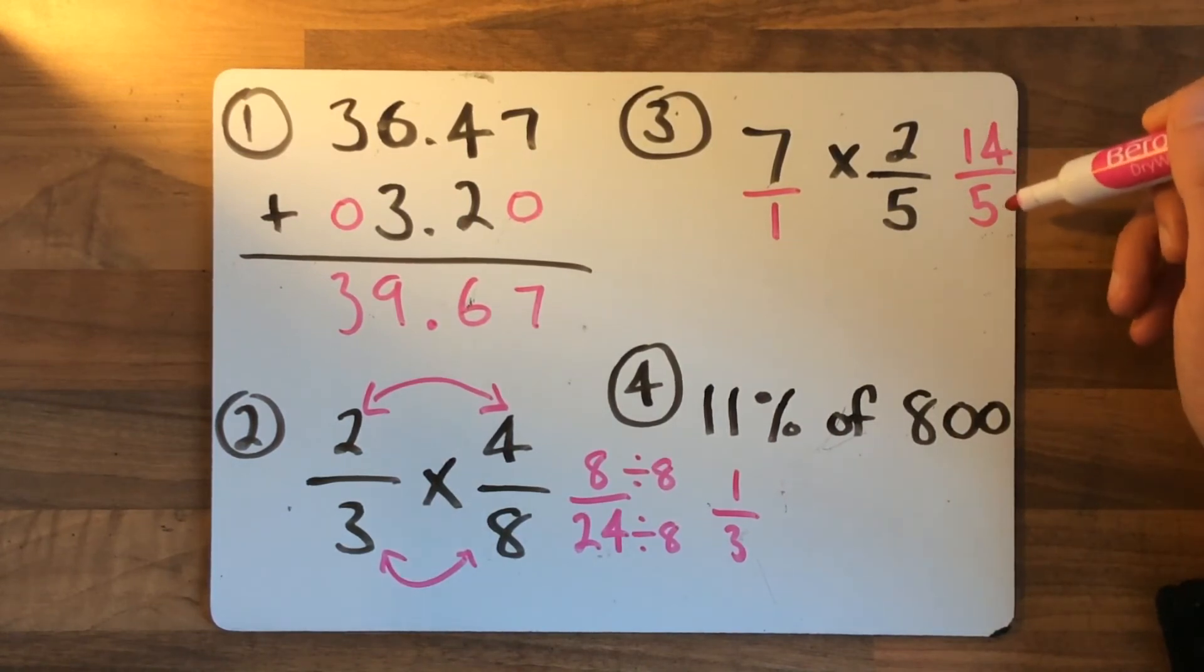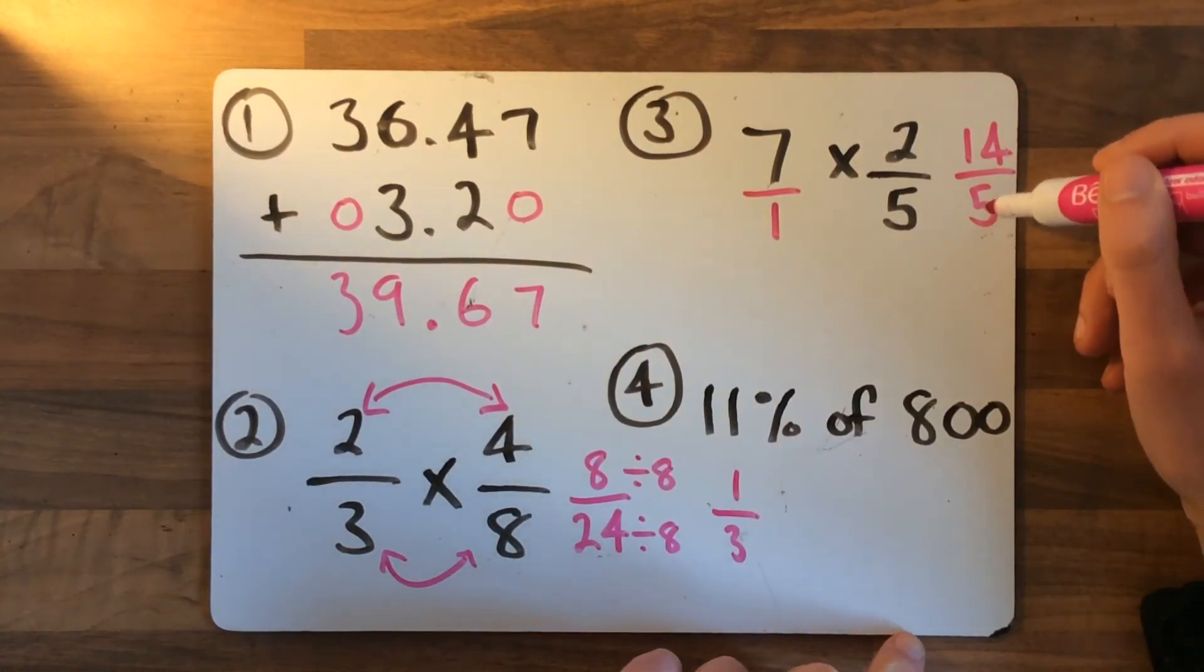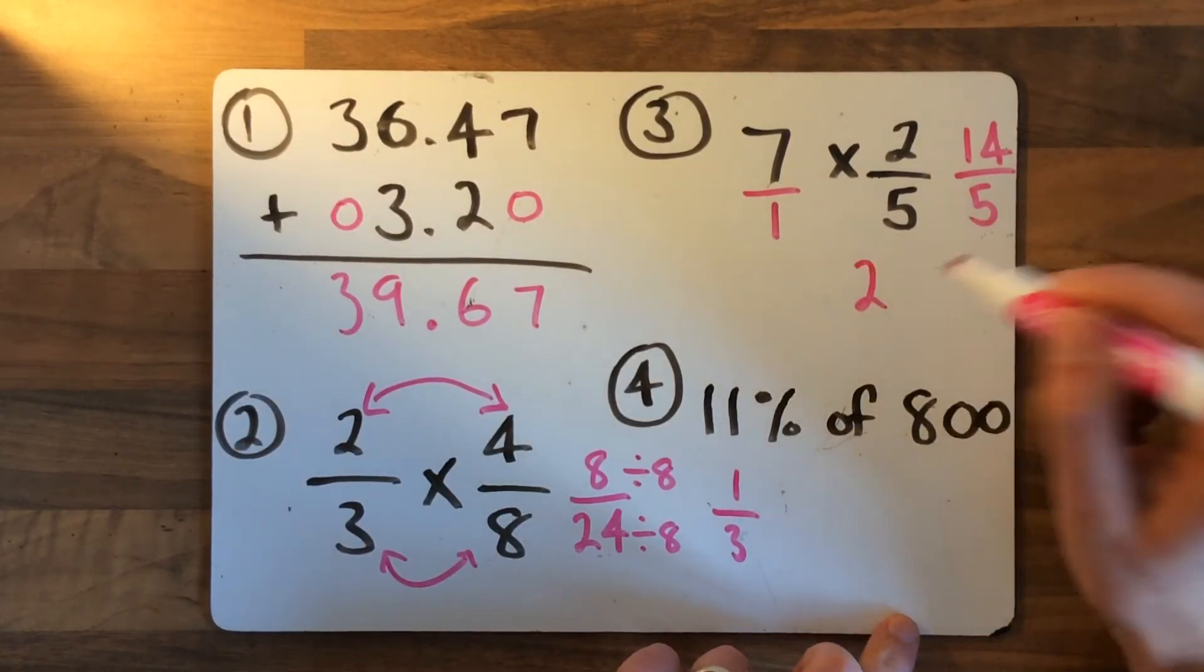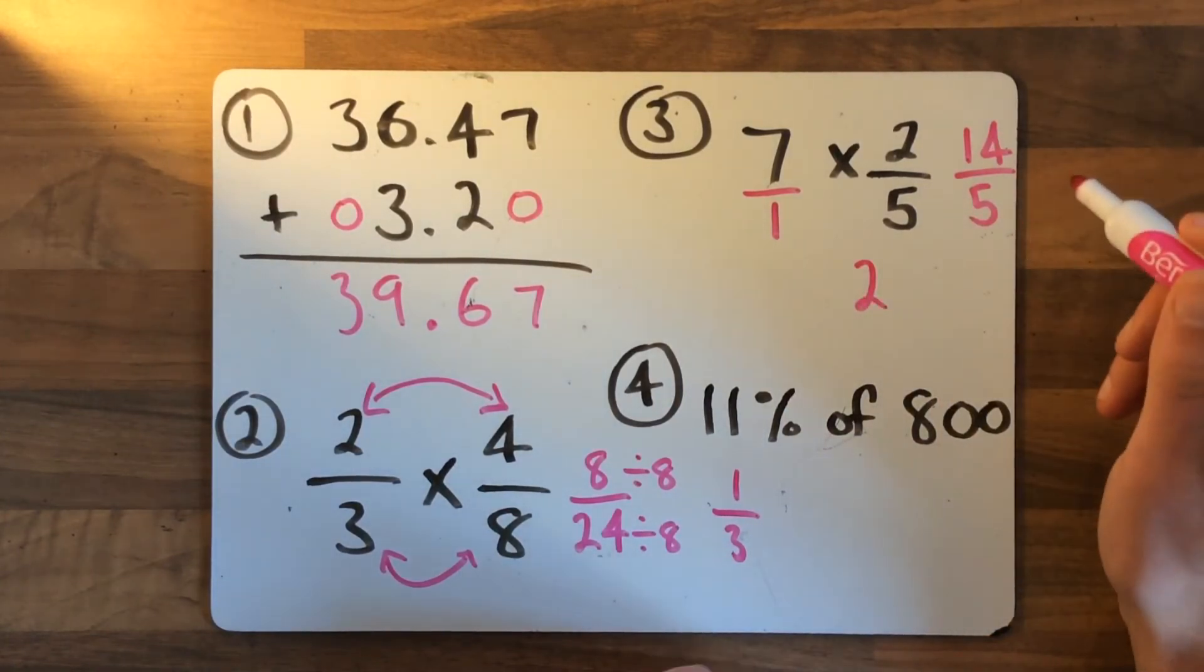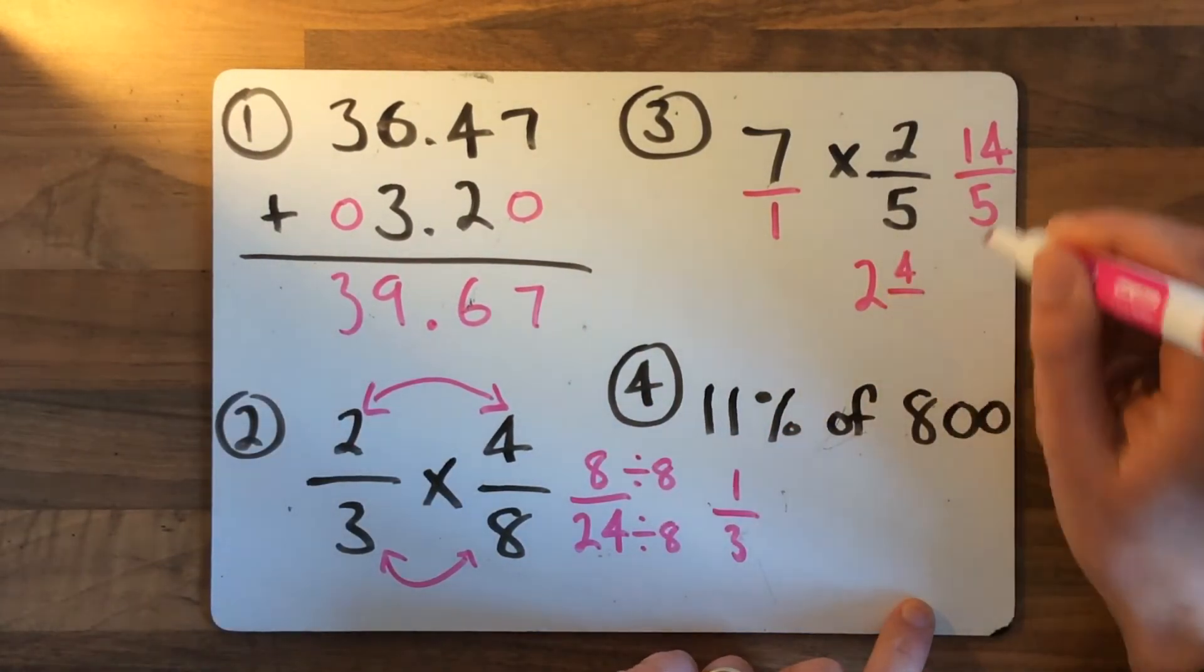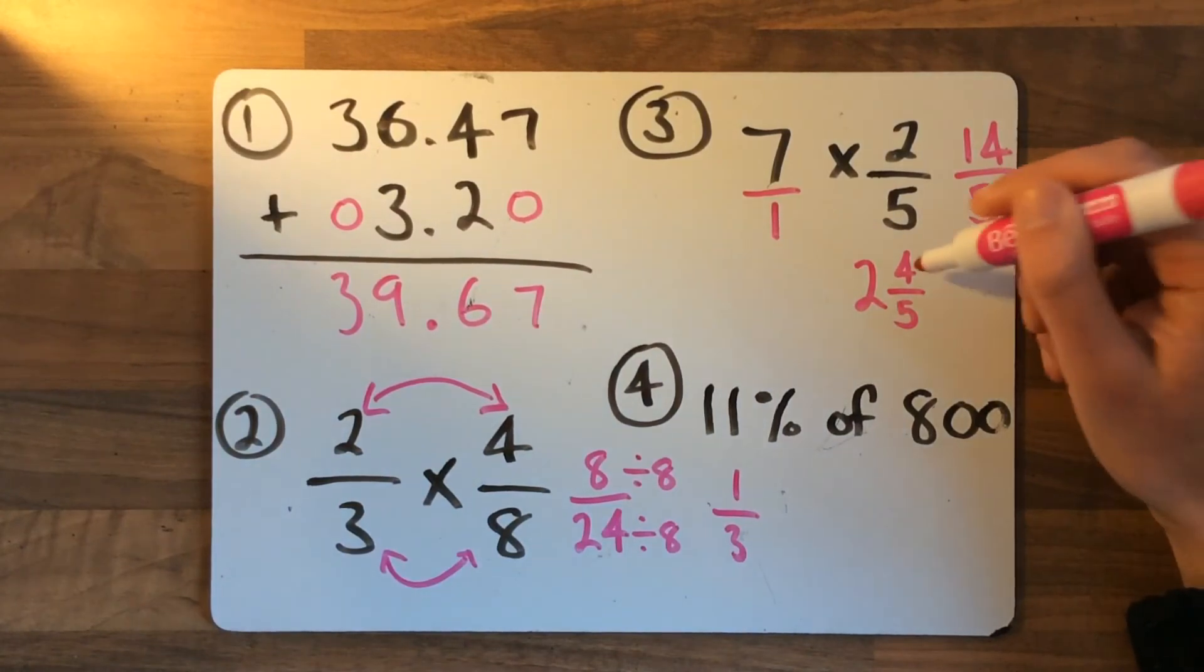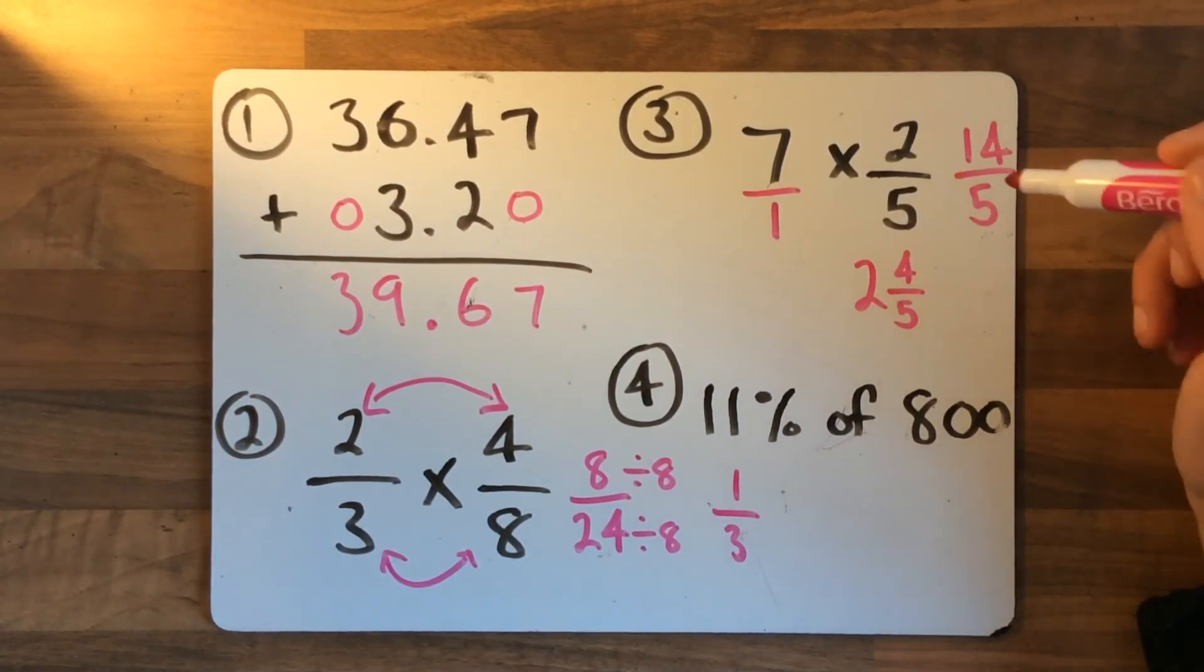If you've got 14 over 5 as your answer, fantastic, it's correct. But let's simplify it to put it into a mixed number. How many 5s go into 14? 2, up to 10. And how many are left over? 11, 12, 13, 14. There are 4 left over, and it's been split up into 5, so it's 4 fifths. So 2 and 4 fifths, which is identical to 14 over 5.